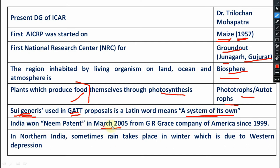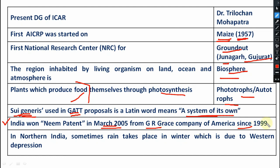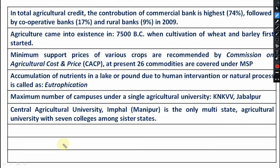India obtained a name patent in March 2005 — from the GR Grace Company of America, which had claimed it since 1999. In northern India, rain sometimes takes place in winter which is due to western depression. The question may come: during winter, rain in northern India is due to which depression? That is your western depression.